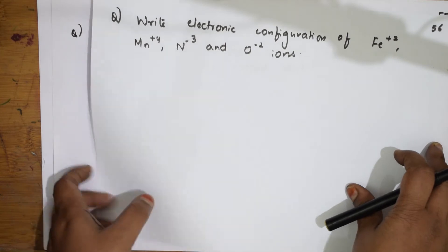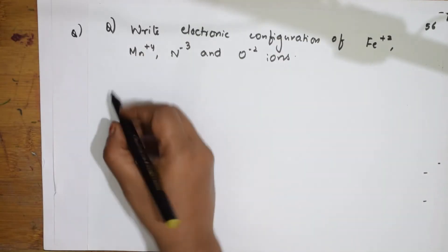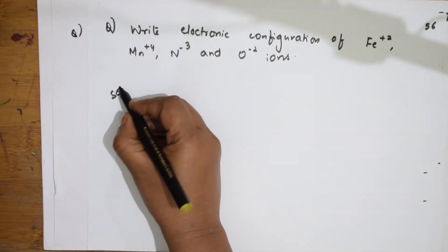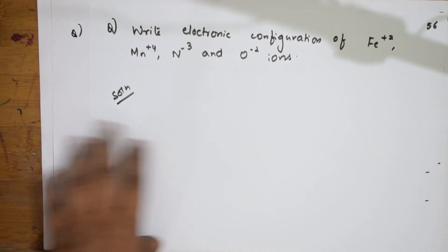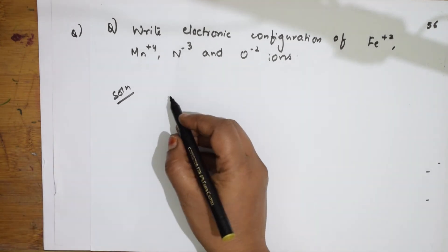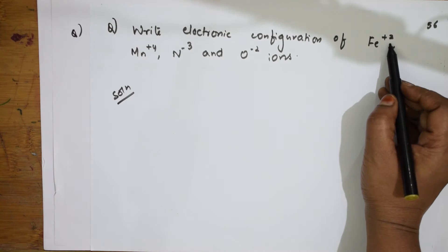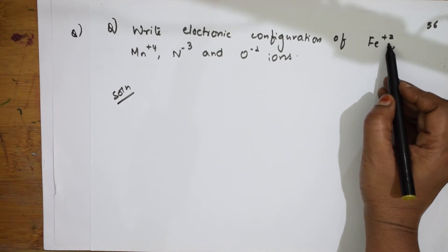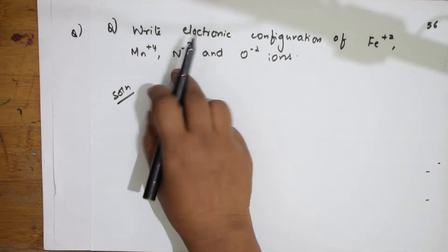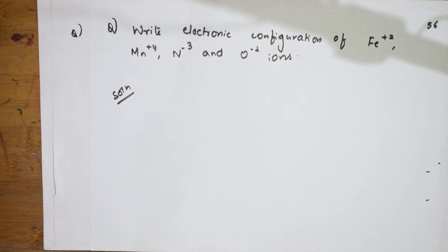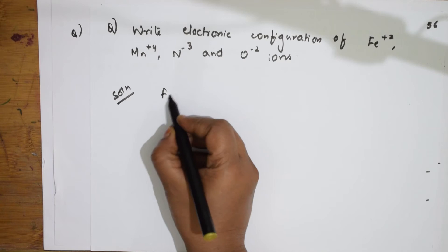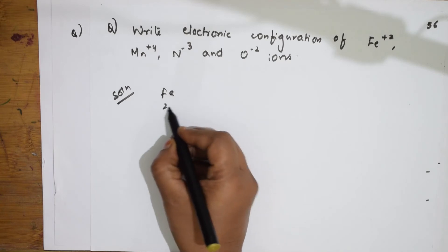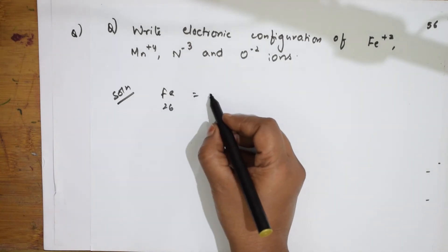Write the electronic configuration of Fe²⁺, Mn⁴⁺, and N³⁻. Remember: plus charge means the atom is deficient of electrons, minus charge means it has excess electrons. For Fe (Z=26), the original configuration is 1s², 2s², 2p⁶, 3s², 3p⁶, 3d⁶, 4s².